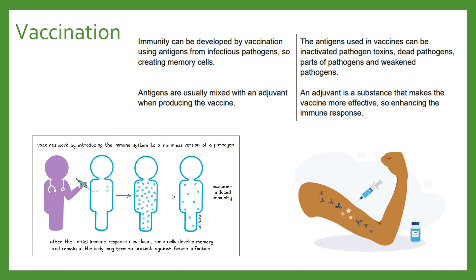By exposing the immune system to the antigen without risking infection itself, you trigger the immune response and get clonal selection, and importantly the build-up of memory cells. So if you do ever encounter the pathogen in your environment, you already have that memory of what to do and can go straight to the secondary response.